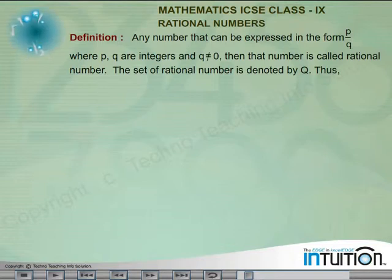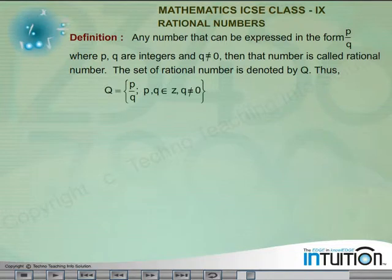The set of rational number is denoted by Q. Thus, Q is equal to P by Q such that P, Q belongs to Z, Q is not equal to 0.